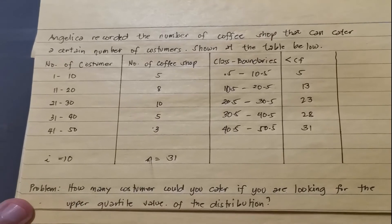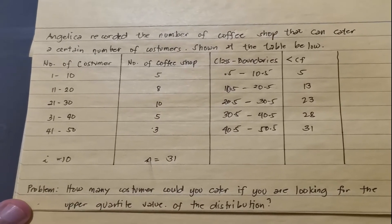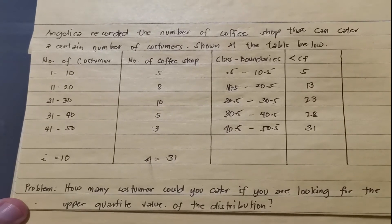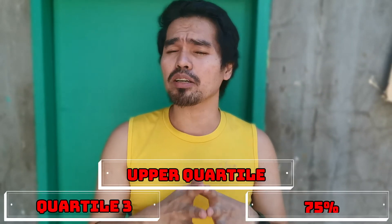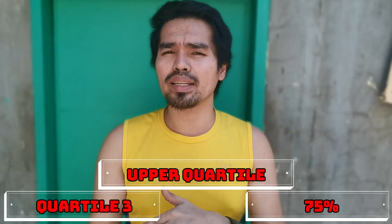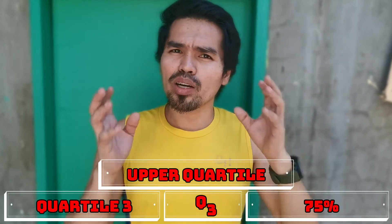So our concern is, we will solve now our problem. How many customers would you cater if you are looking for the upper quartile value of the distribution? We have to understand that in order for us to solve for the quartile value, or specifically the upper quartile, you know, there are actually three quartile values. We have the quartile 1, also known as the lower quartile, that's Q sub 1. And then we have also quartile 2, which is equivalent to the median. And then we have quartile 3, also known as the upper quartile, equivalent to 75% of the data set. Now, since we are solving for the upper quartile, then that means that we are solving for Q sub 3.